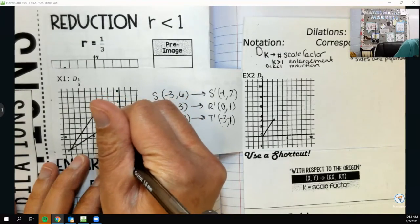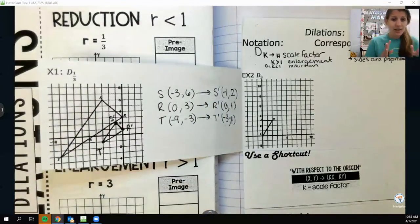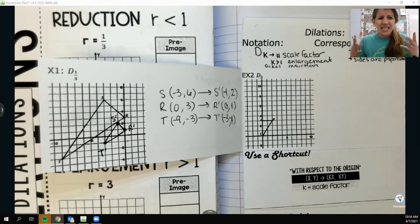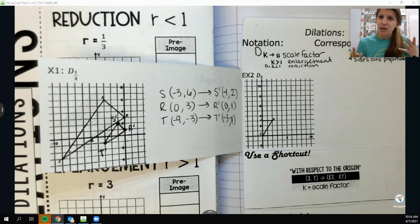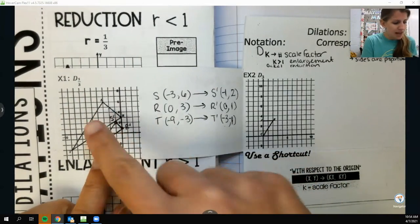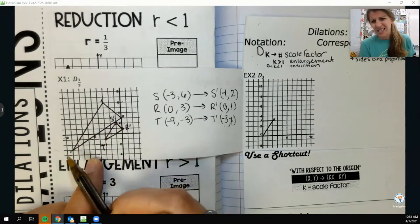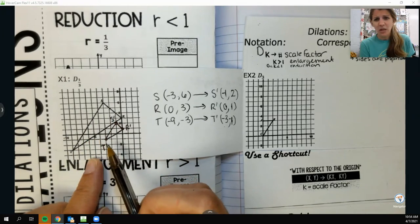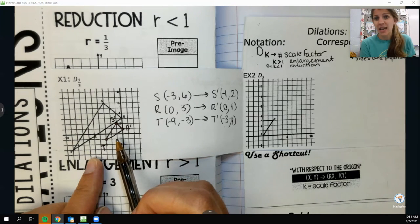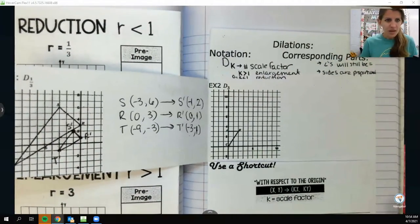So then once I have all my prime points, I can go plot them. Super duper simple. So S prime is going to be at negative 1 comma 2. There is kind of a way to do it on your graph, like where you're taking this point and bringing it closer to the origin, but it's kind of funky and you have to draw a whole bunch of lines and it just gets real messy. R prime is at 0 comma 1. Oh my god, look at that little baby shape. He's so tiny. And then T prime is at negative 3 comma negative 1 right there. So T prime.